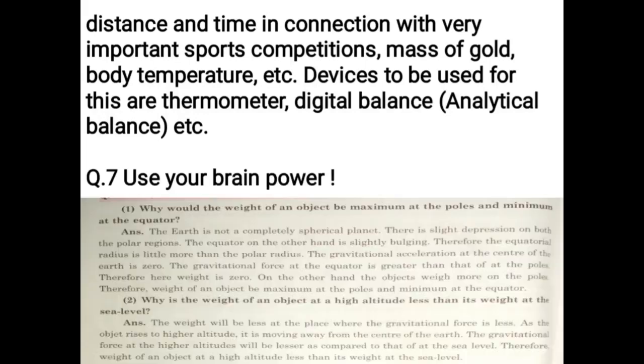Use your brain power. Why would the weight of an object be maximum at the poles and minimum at the equator? The Earth is not a completely spherical planet. There is slight depression on both the polar regions. The equator on the other hand is slightly bulging. Therefore,